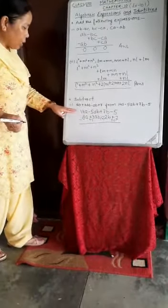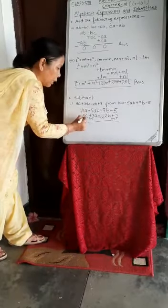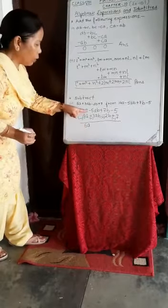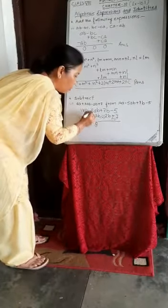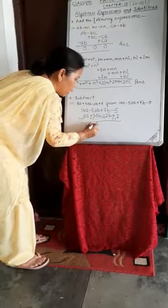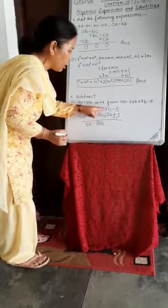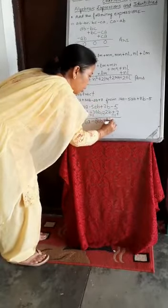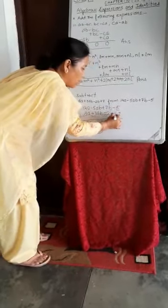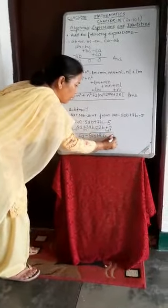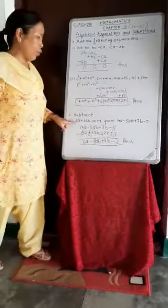Now we consider each pair of signs. This is minus over here, so plus minus is minus: 14 minus 8 is 6A. Both signs here are minus, and minus minus is plus, so 5 plus 3 is 8 — we take the sign of the greater number, giving minus 8AB. Minus 2B changes to plus 2B, so plus plus is plus: 7 plus 2 is 9B. Both are minus, and minus minus is plus: 7 plus 5 is 12. So the answer is 6A minus 8AB plus 9B minus 12.